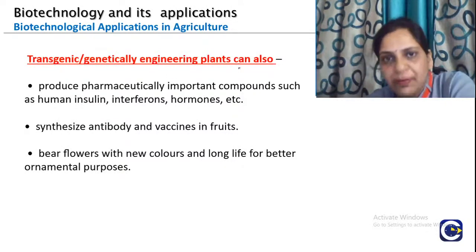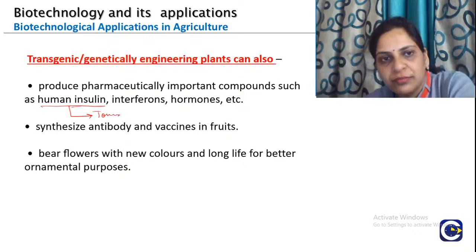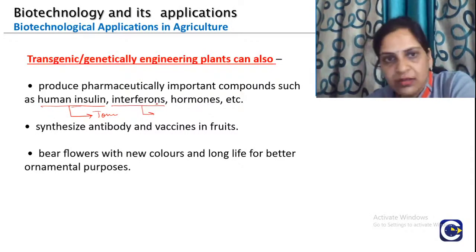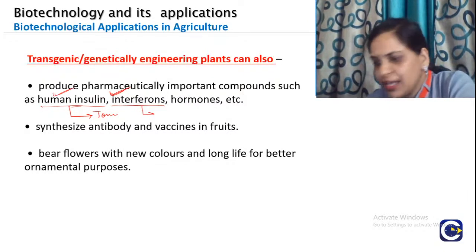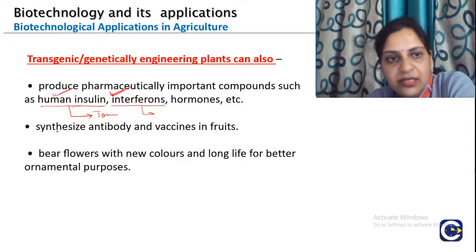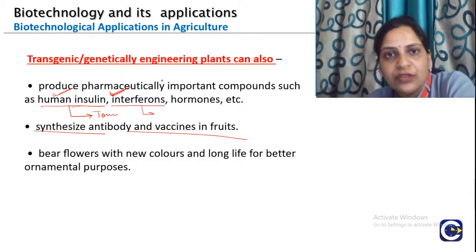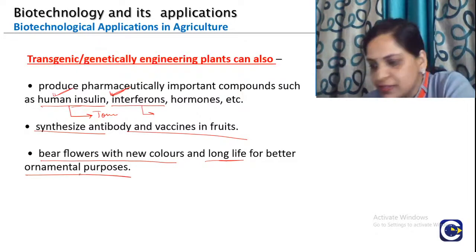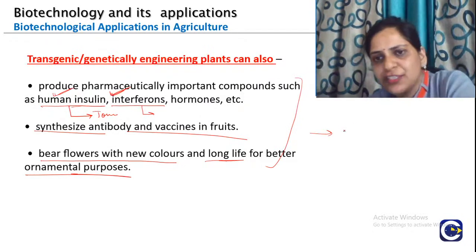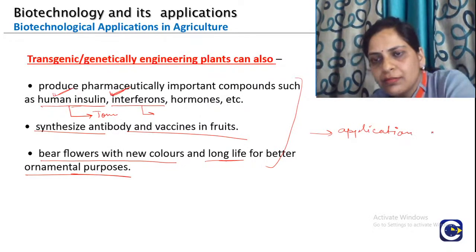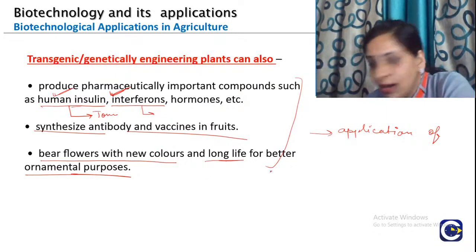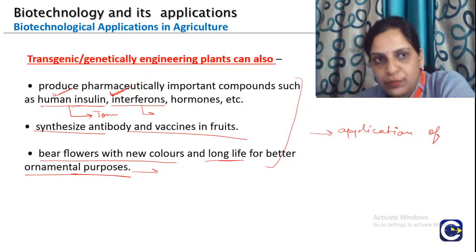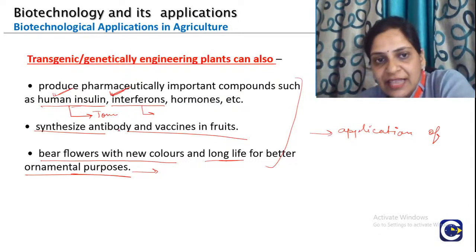Transgenic genetically engineered plants can also produce pharmaceutically important compounds. These compounds include human insulin — we will be talking tomorrow about RNA interference also in detail. Other applications include synthesized antibodies and vaccines, and flowers with new colors and long life for better ornamental purposes. These are all applications of biotechnology.